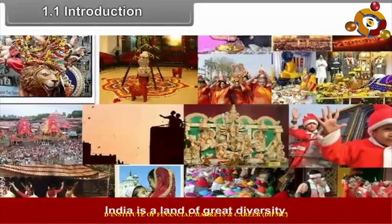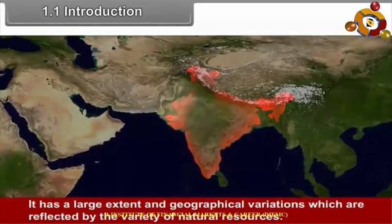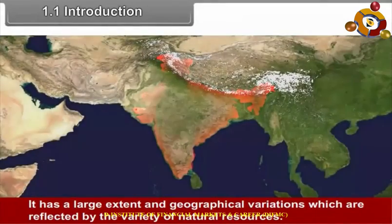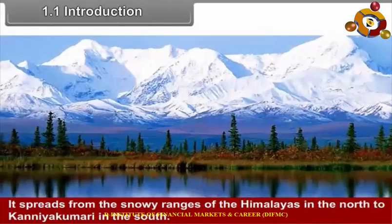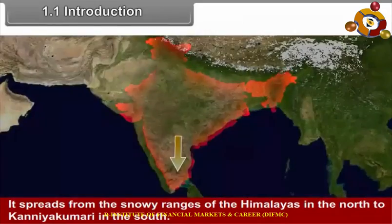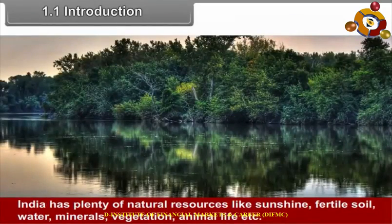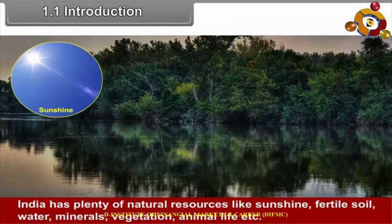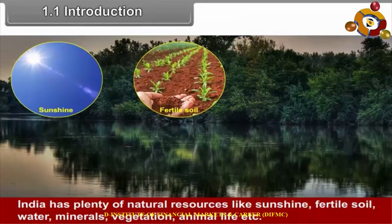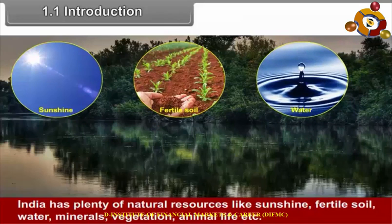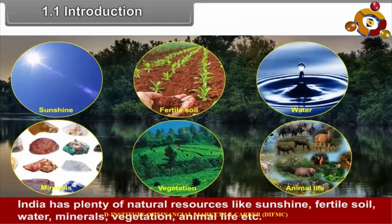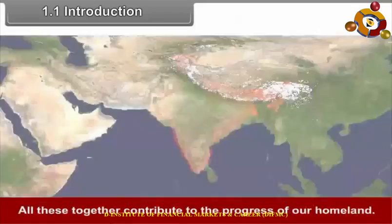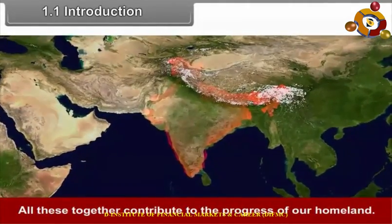India is a land of great diversity. It has a large extent and geographical variations which are reflected by the variety of natural resources. It spreads from the snowy ranges of Himalayas in the north to Kanyakumari in the south. India has plenty of natural resources like sunshine, fertile soil, water, minerals, vegetation, animal life, etc. All these together contribute to the progress of our homeland.